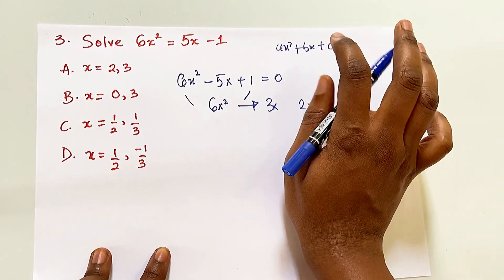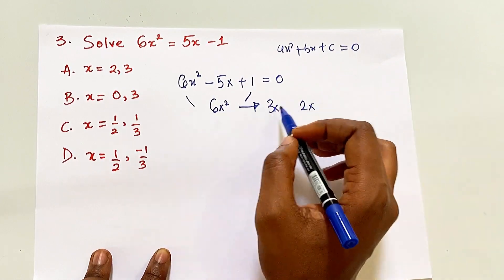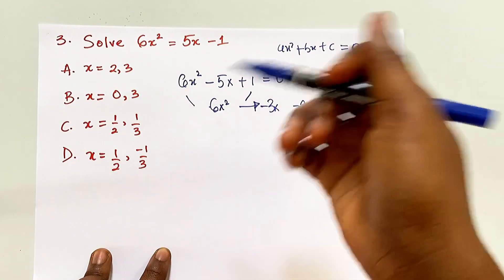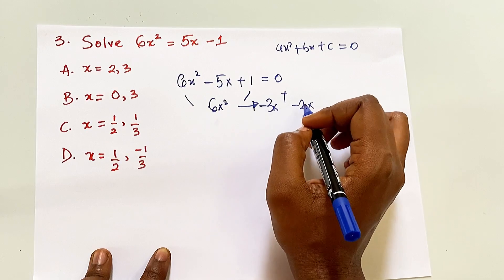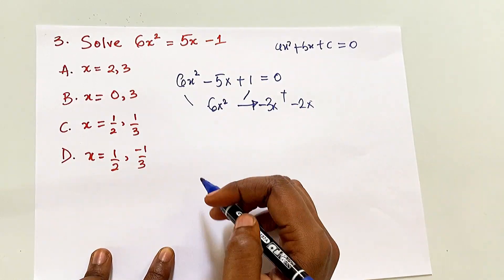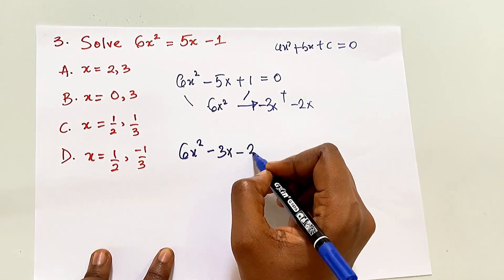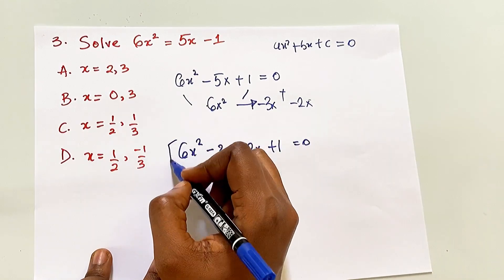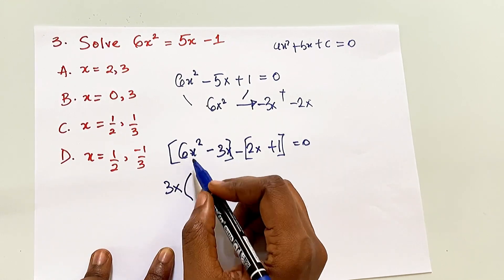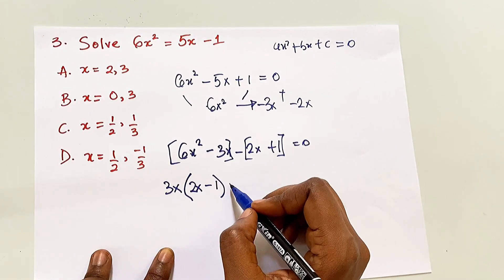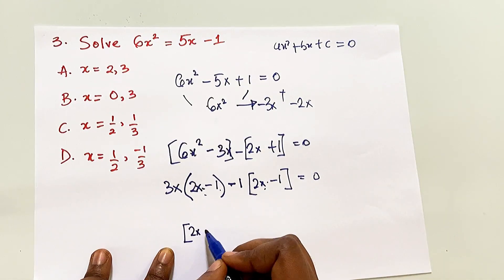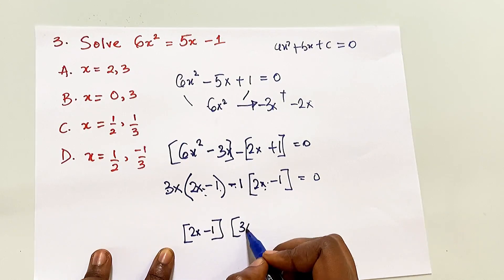With -3x and -2x: when we multiply them, the negatives cancel giving a positive, but when added they give -5x — correct. So we substitute: 6x² - 3x - 2x + 1 = 0. Group the terms: 3x is common to the first two, giving 3x(2x - 1). For the last two, -1 is common, giving -1(2x - 1). These must match, so we get (2x - 1)(3x - 1) = 0.